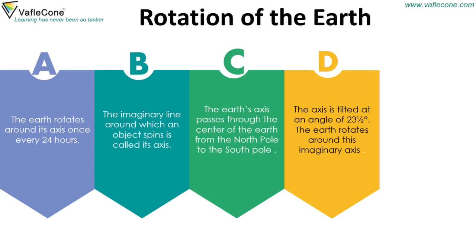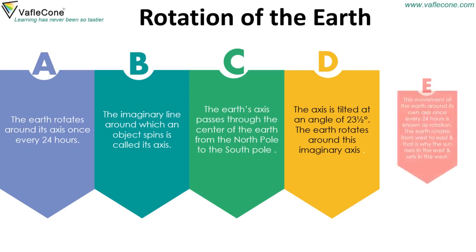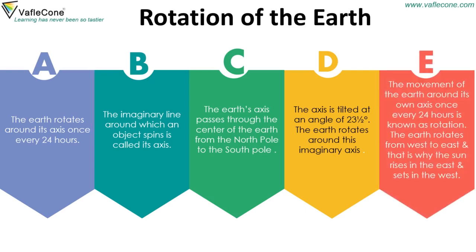The Earth rotates around its imaginary axis. The movement of the Earth around its own axis once every 24 hours is known as rotation. The Earth rotates from west to east, and that is why the sun rises in the east and sets in the west.